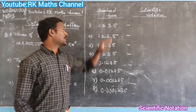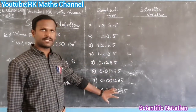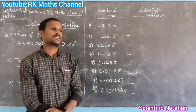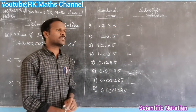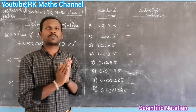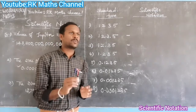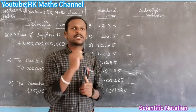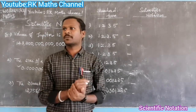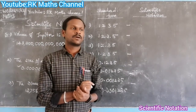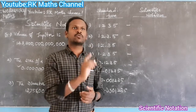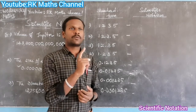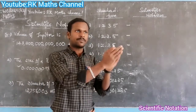So this is standard form. We know the numbers. Scientific notation — we know the number, we know the decimal point. So what do we know? Unit place. So if we know the point, there is one digit in the unit place.